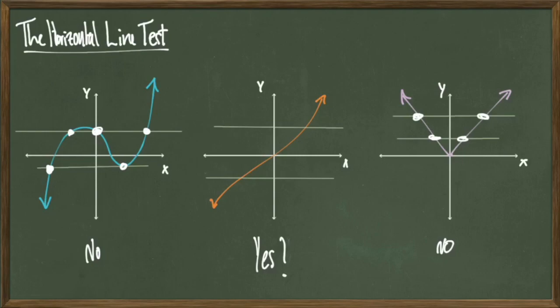However, with my middle graph, any horizontal line I draw will cross my graph at most once, so that tells me that my orange graph in the middle is 1 to 1. Therefore it has an inverse, whereas the other two graphs do not.